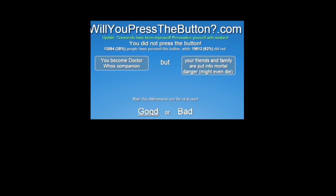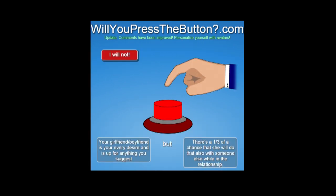Your girlfriend or boyfriend is your every desire and is up for anything you suggest. But there's a one third of a chance that she will do that also with someone else while in the relationship. A third of a chance? No. That's pretty good odds. No. But then again, if you know it going in, there's one third of a chance she's gonna do this weird shit I like with this guy over here. If you know that going into the relationship and you're cool with it, I'd do it.